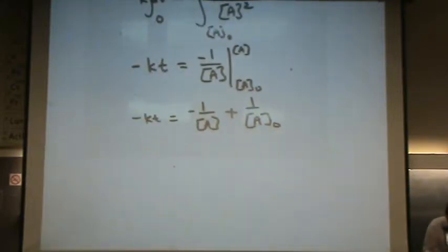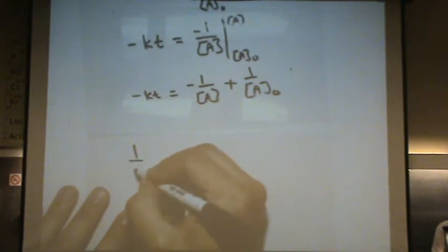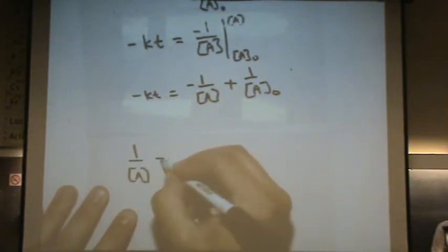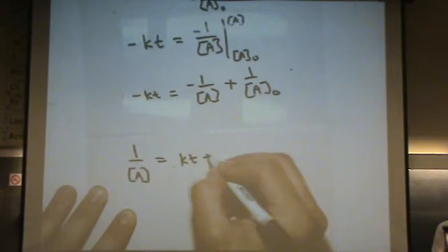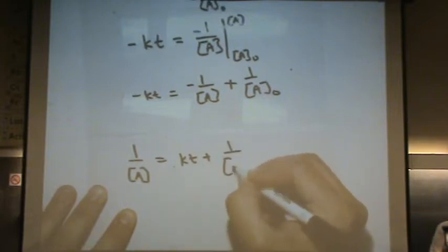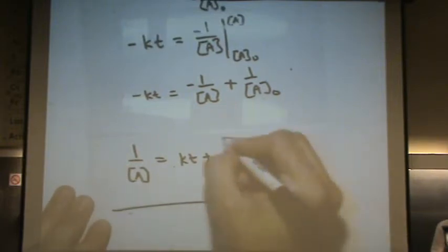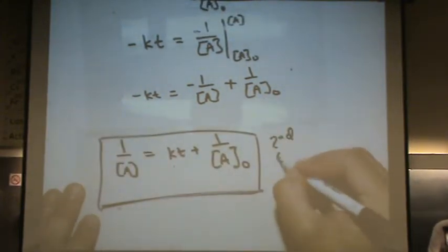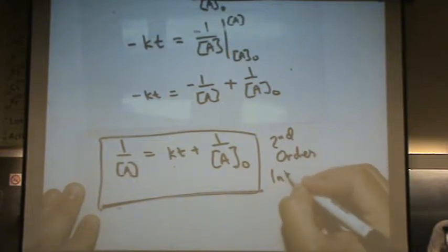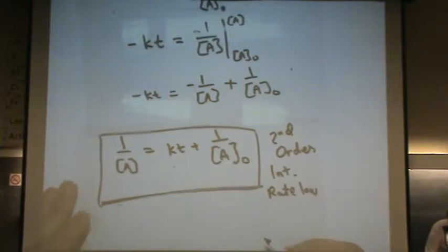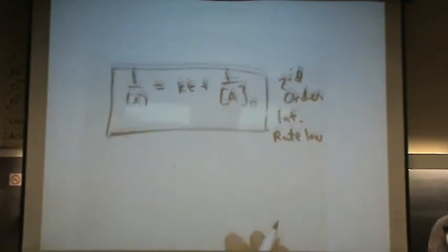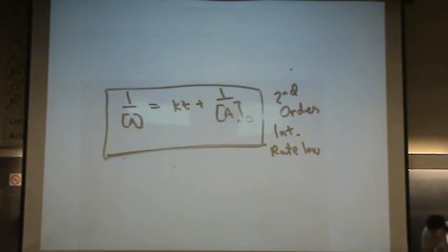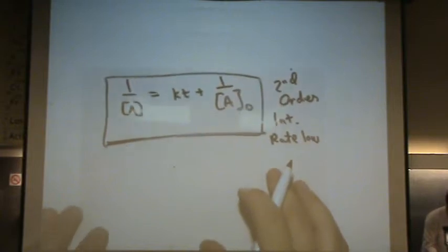And if I just rearrange that a little bit, I'll put the 1 over A over here. Move the Kt over to the right hand side so it's positive. Make everything positive. Now, you can zone back in if you had zoned out. And here's your second order integrated rate law. That's the important one. That's the one we're going to use. So, there's now a zero order, a first order, and a second order integrated rate law.